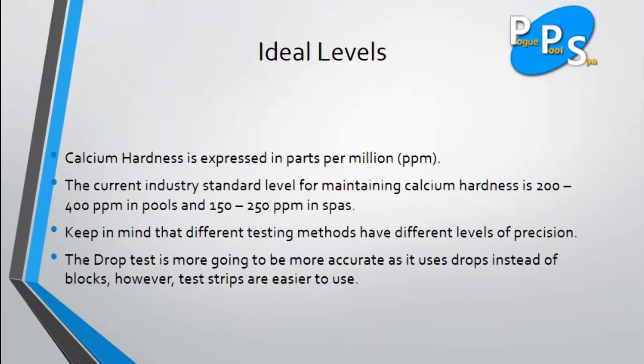The first thing you need to know is the ideal levels. Calcium hardness is expressed in parts per million or ppm. The current industry standard level for calcium hardness is 200 to 400 ppm in pools and 150 to 250 ppm in spas.